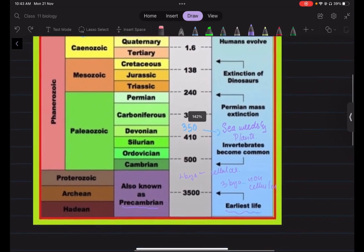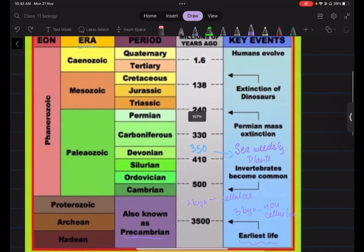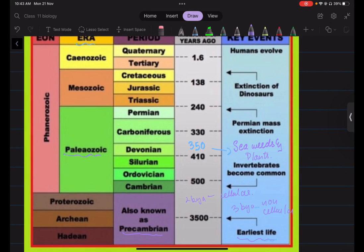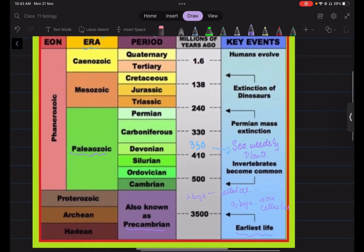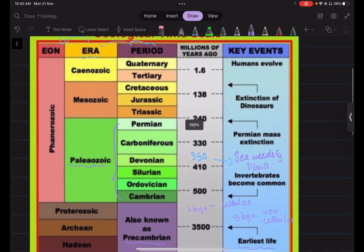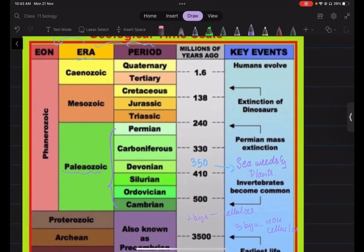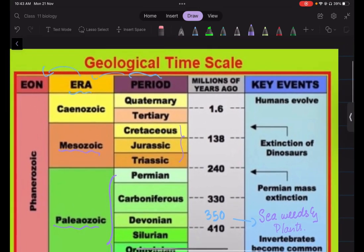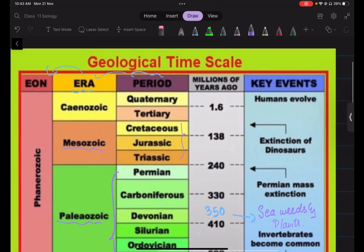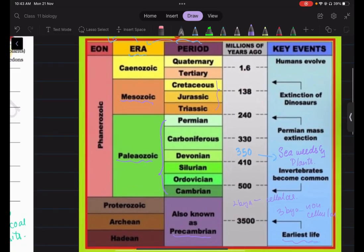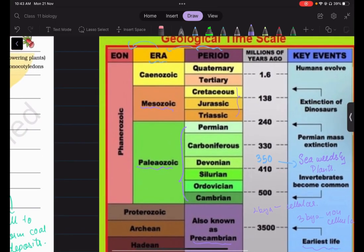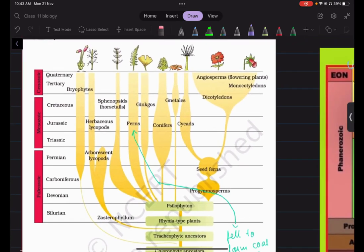So basically when the pre-Cambrian period ended the Paleozoic era started and it contained the following periods. And then we have the Mesozoic era where the dinosaurs got dominant and it contained these three periods. And then finally we have the Cenozoic era where humans finally evolved. So taking or rather focusing on these eras, let us study the evolution of plants.